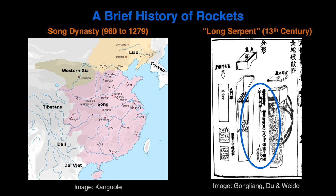The earliest known use of rockets is in China, perhaps beginning even earlier than the 13th century. Rockets were first developed in the Song Dynasty, which was around between the year 960 to 1279. On the right is a picture of the Long Serpent rockets, which were arrows with rockets mounted on their sides. As such, the first documented use of rockets is in warfare.